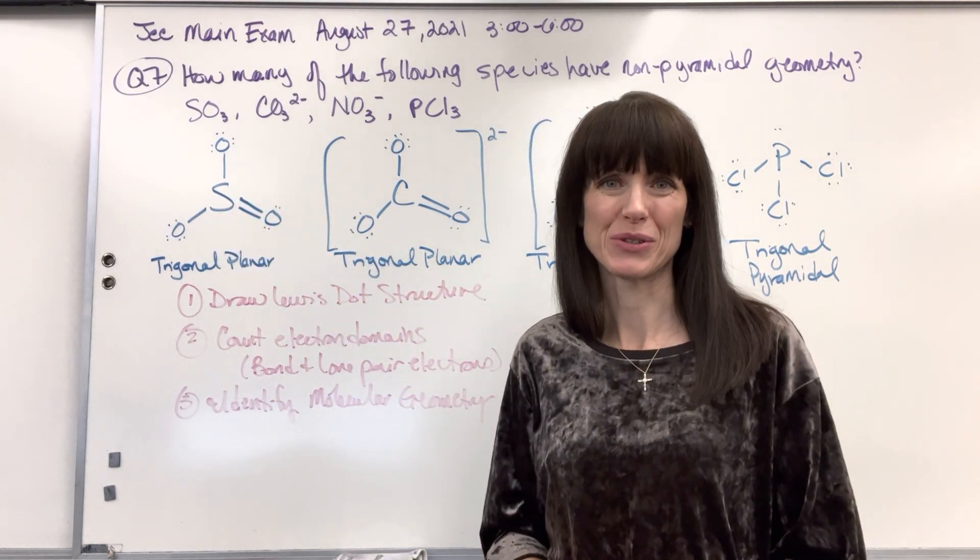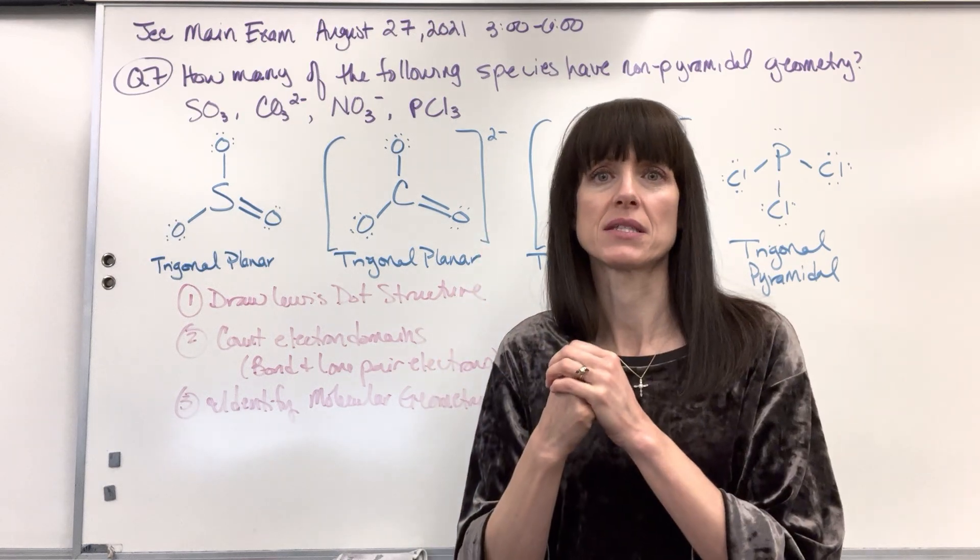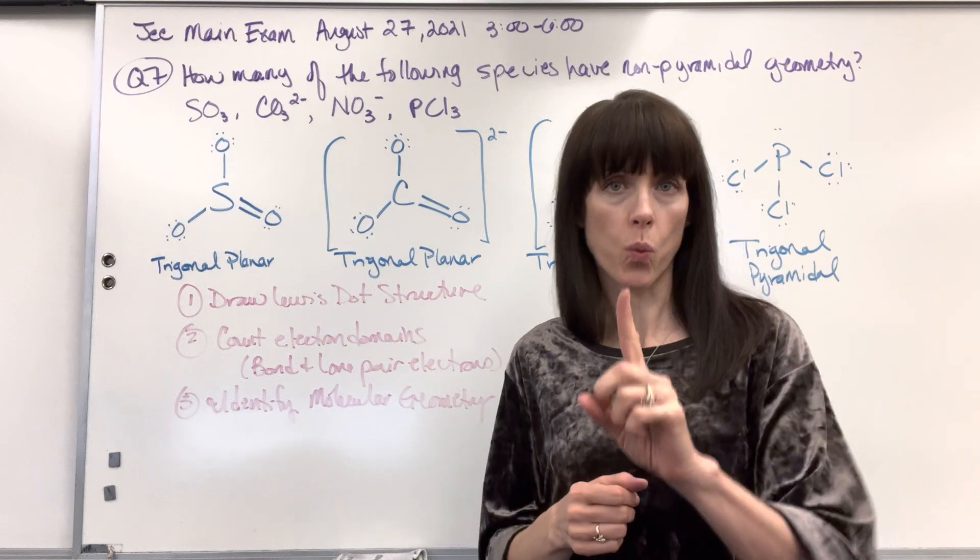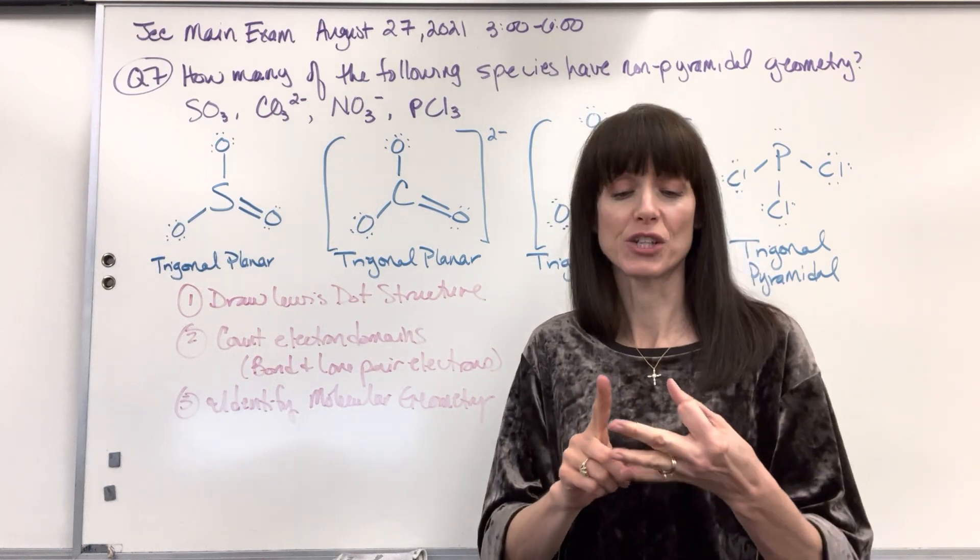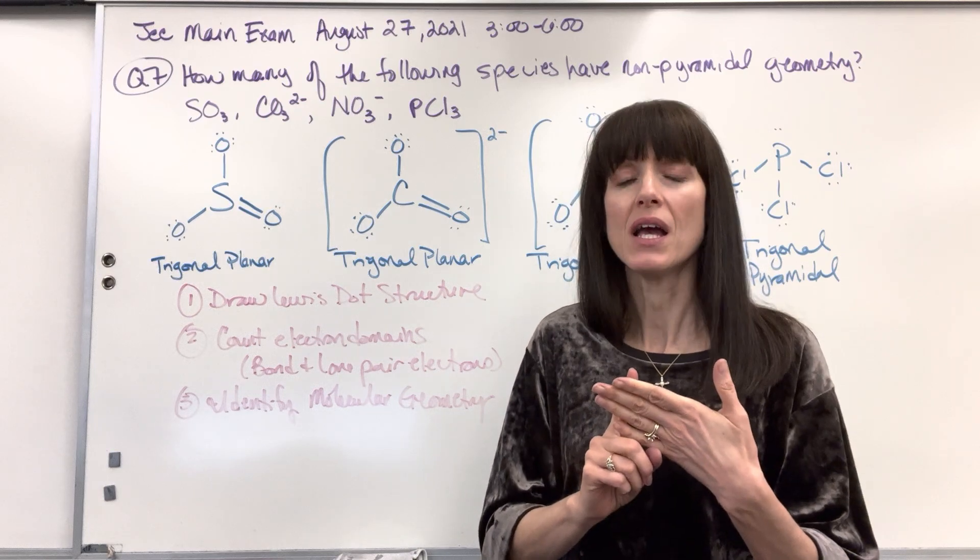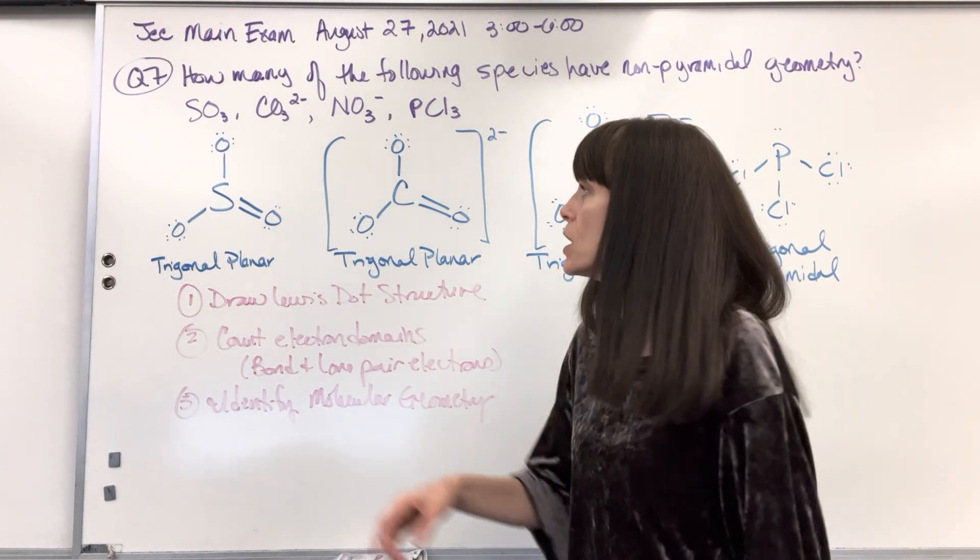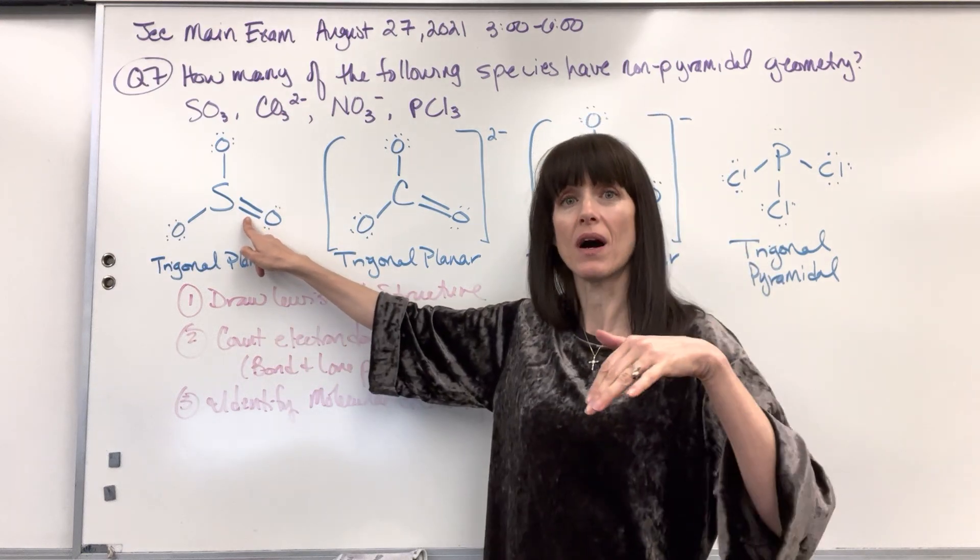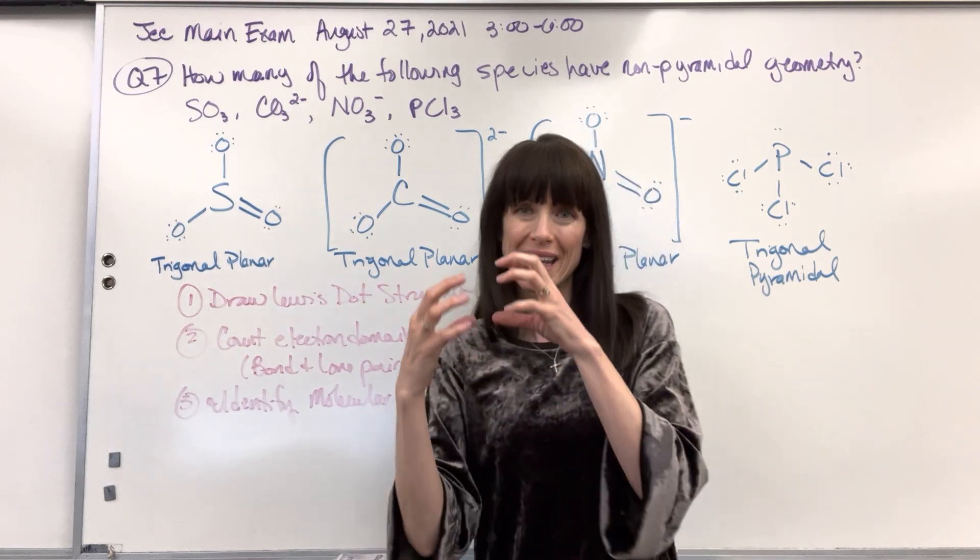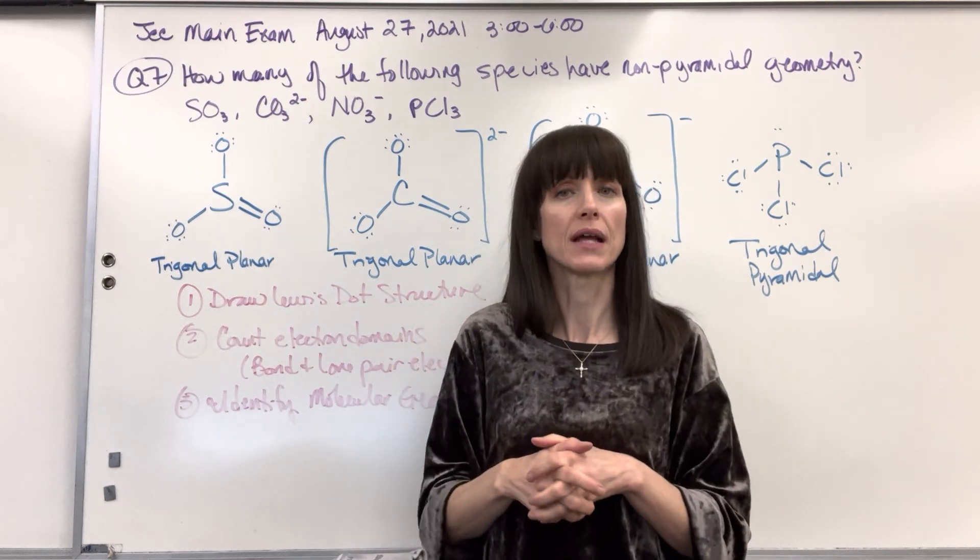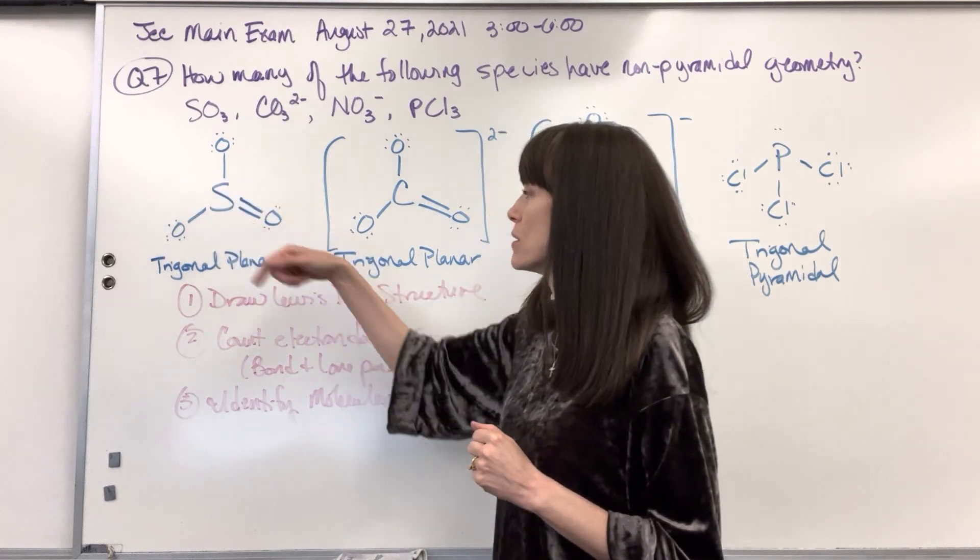Little reminder on counting electron domains. An electron domain is an area where electrons exist. Here is what qualifies as one electron domain: a single bond, a double bond, a triple bond, and a lone pair. Any one of those qualifies as one area where electrons exist. So even though this is a double bond, and you and I know that there are four electrons there, it's still one area, one domain, where electrons exist. So it's one electron domain.